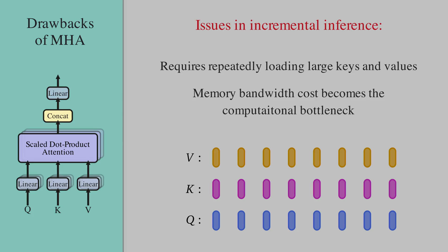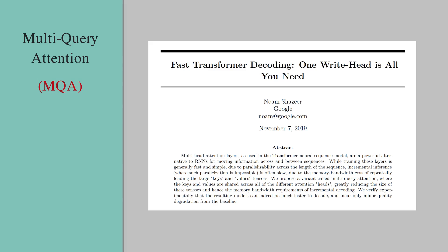Let's see two approaches for dealing with this memory bandwidth issue. The first approach is multi-query attention, or MQA for short, which was proposed in this paper: Fast Transformer Decoding: One Write-Head is All You Need. This paper tries to address the memory bandwidth problem in incremental inference, and as we will see, they gain significant speedup with some minor quality degradation.